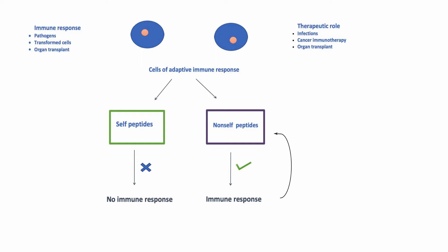First of all, we need to understand why the body needs the HLA system. Cells of immune response have a difficult situation. They need to recognize self-peptides to avoid an immune response. At the same time, they need to recognize peptides derived from pathogens and from transformed cells so an immune response can be elicited.